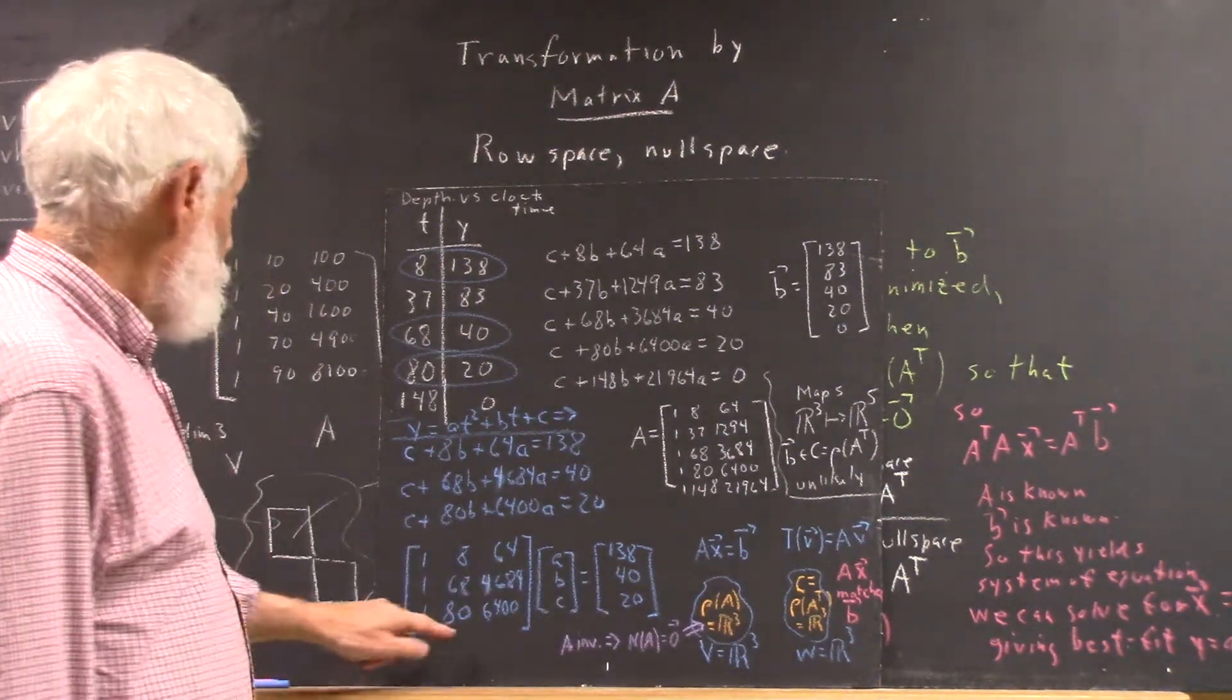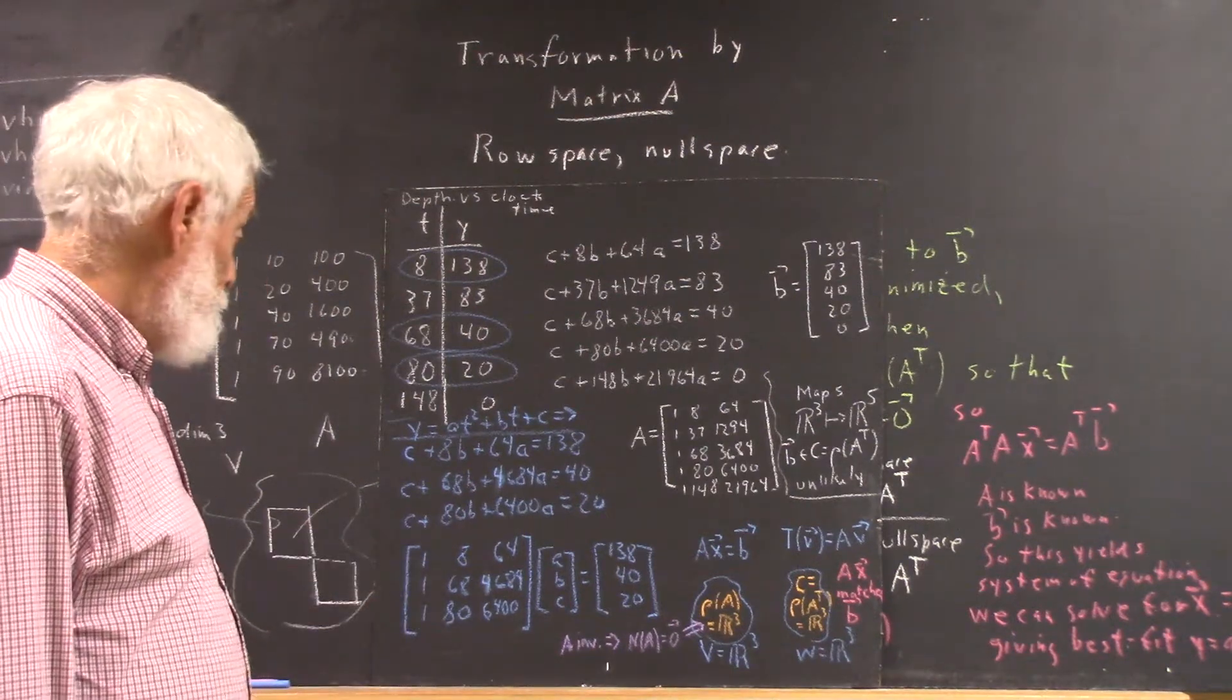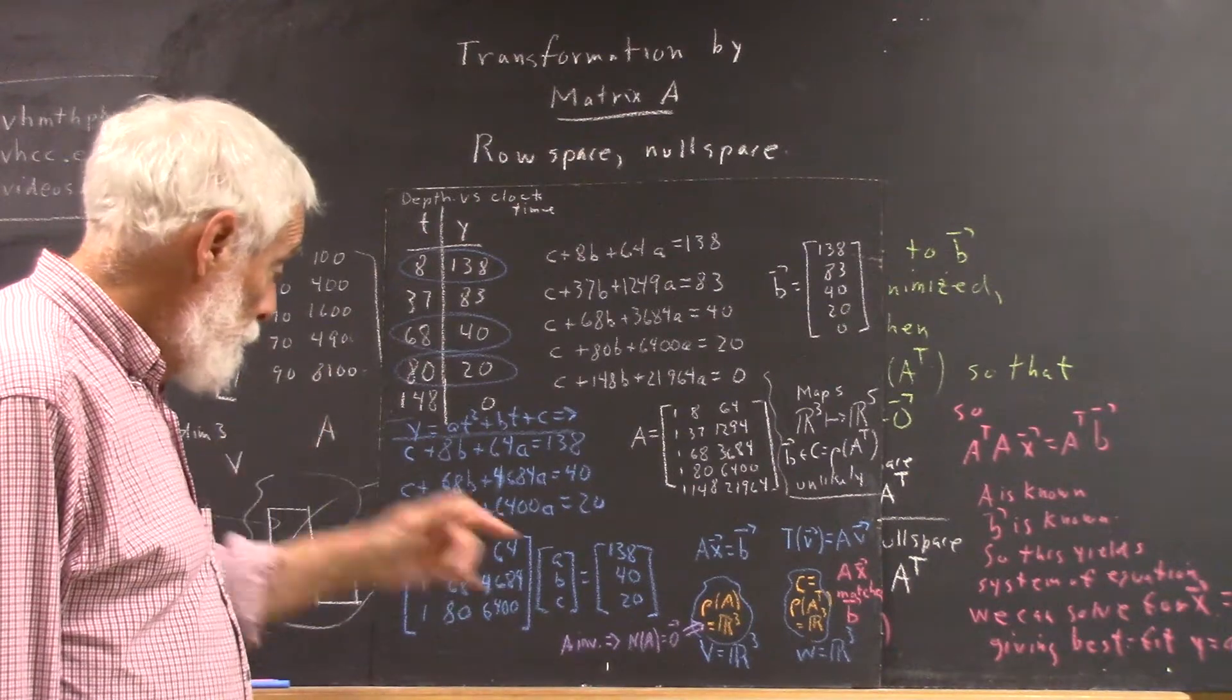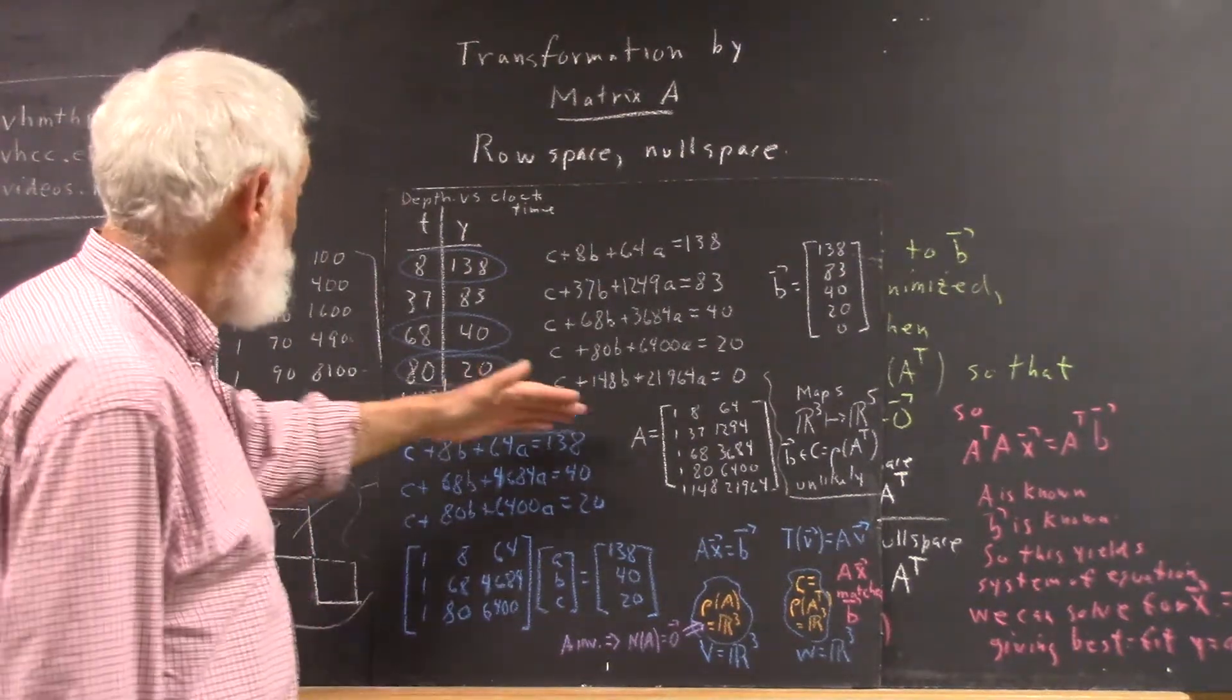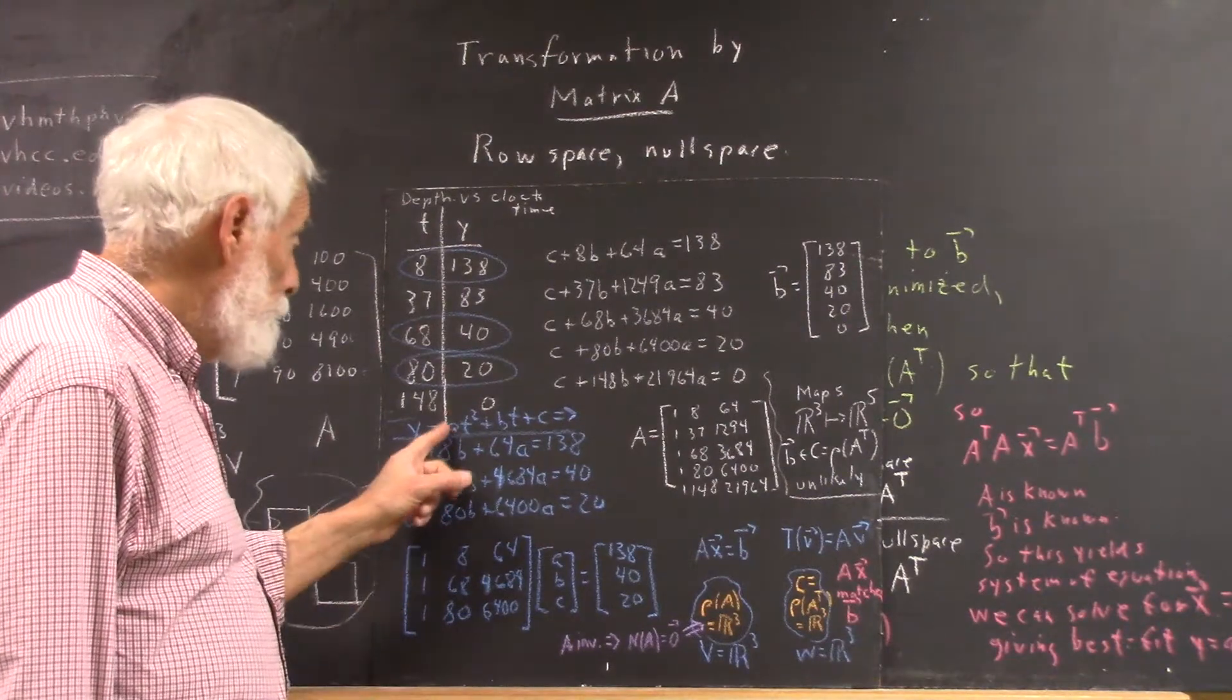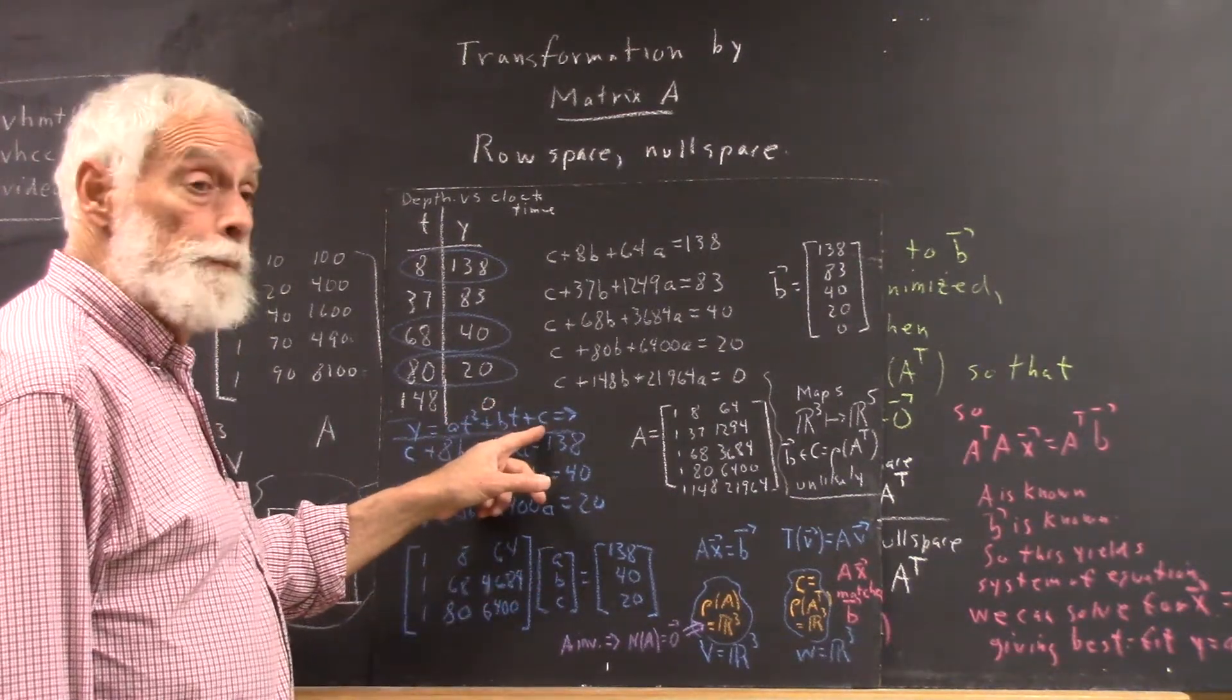We expect for many reasons that this matrix will be invertible, so we can solve for a, b, and c. When we plug the values of a, b, and c back into the quadratic function, we get a specific function with a number in front of t², a number in front of t, and our c value at the end.